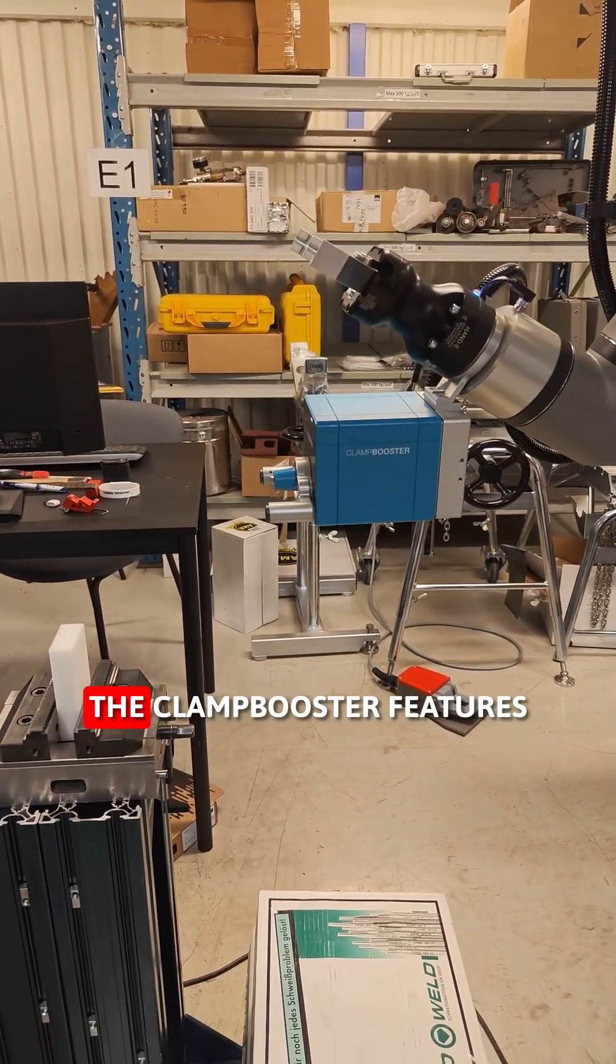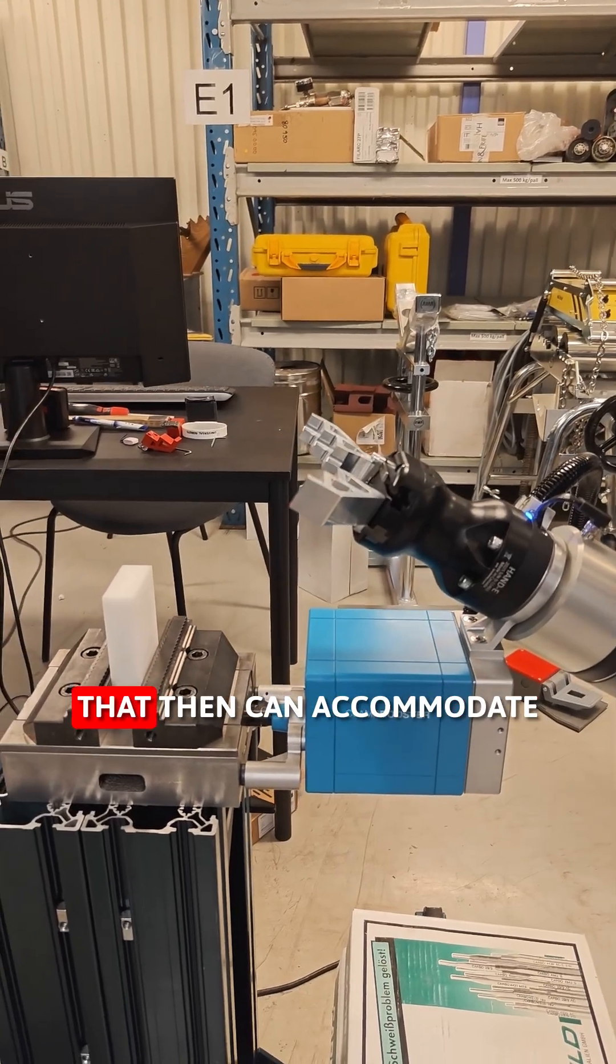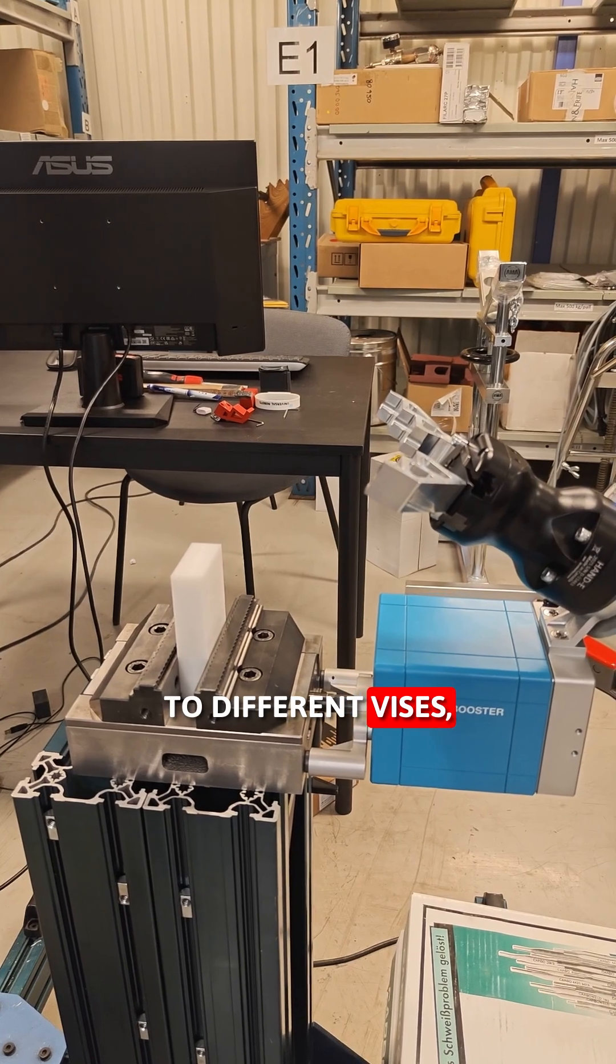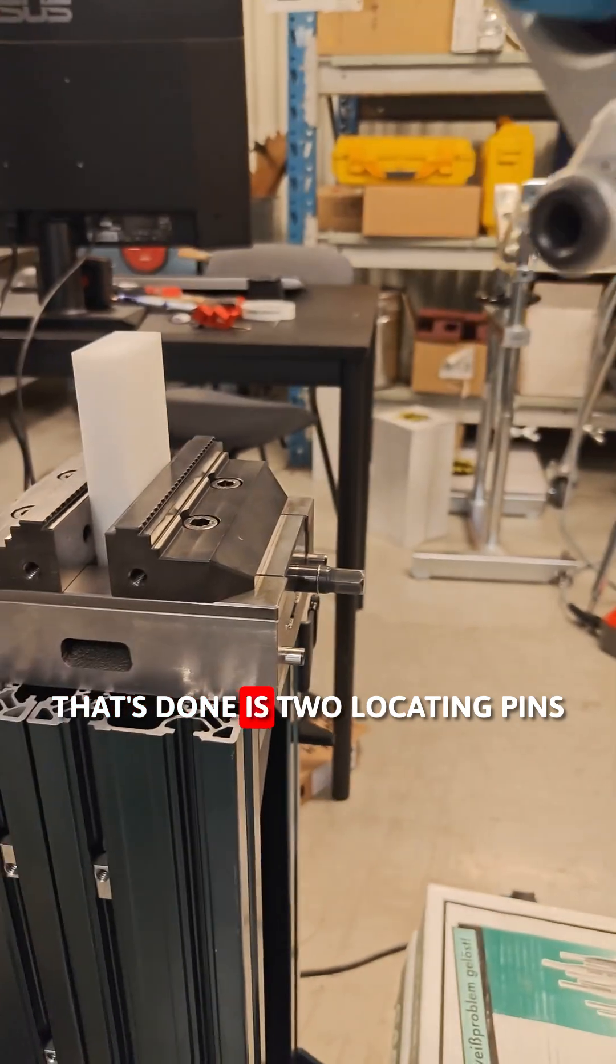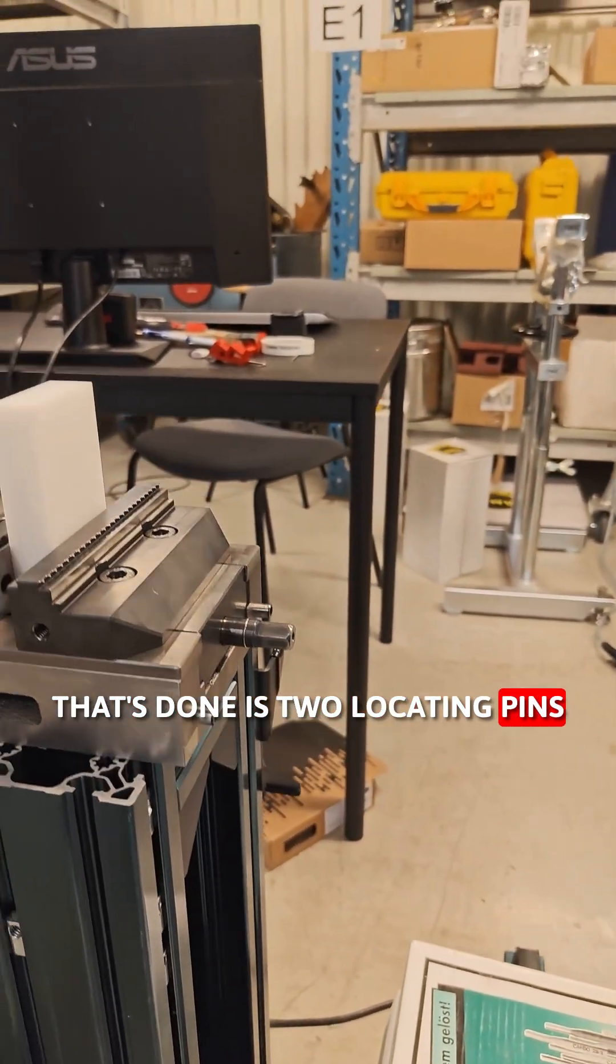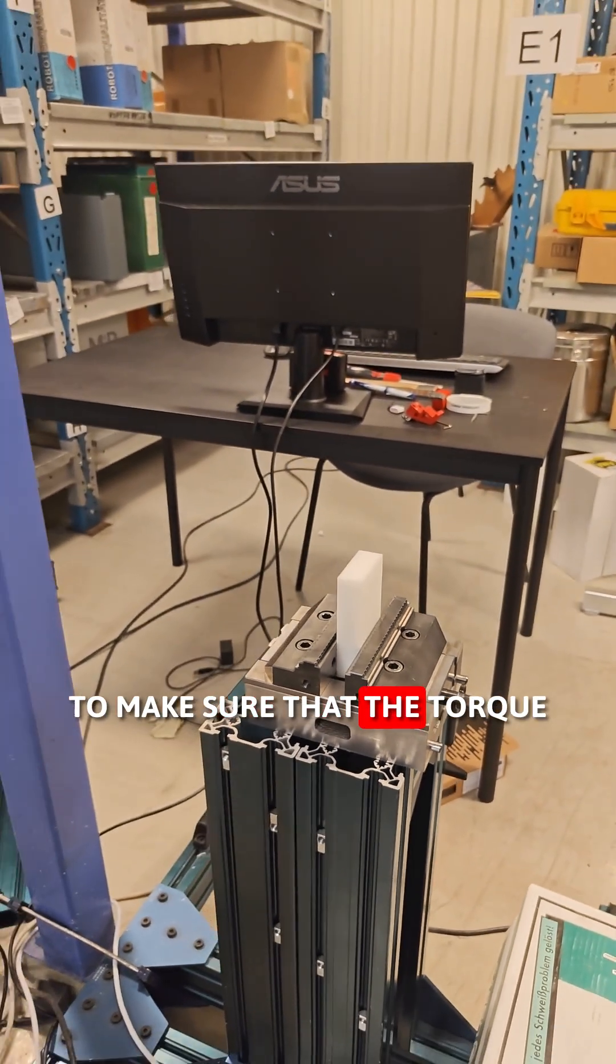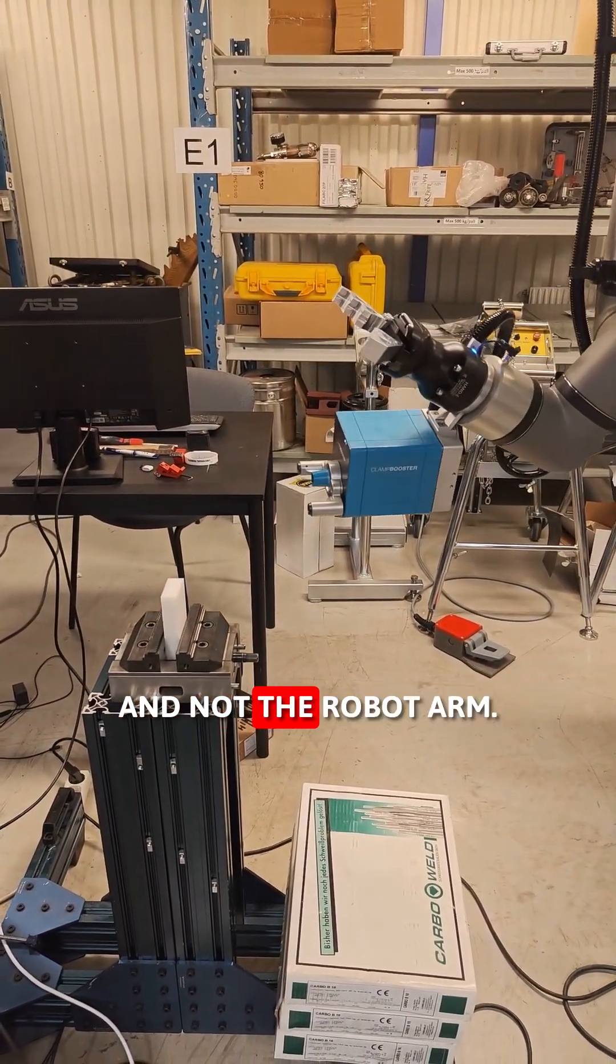The clamp booster features a spring-loaded collet that can accommodate different vices. The vise modification is two locating pins that have been drilled into the vise to make sure that the torque is taken up by the clamp booster and not the robot arm.